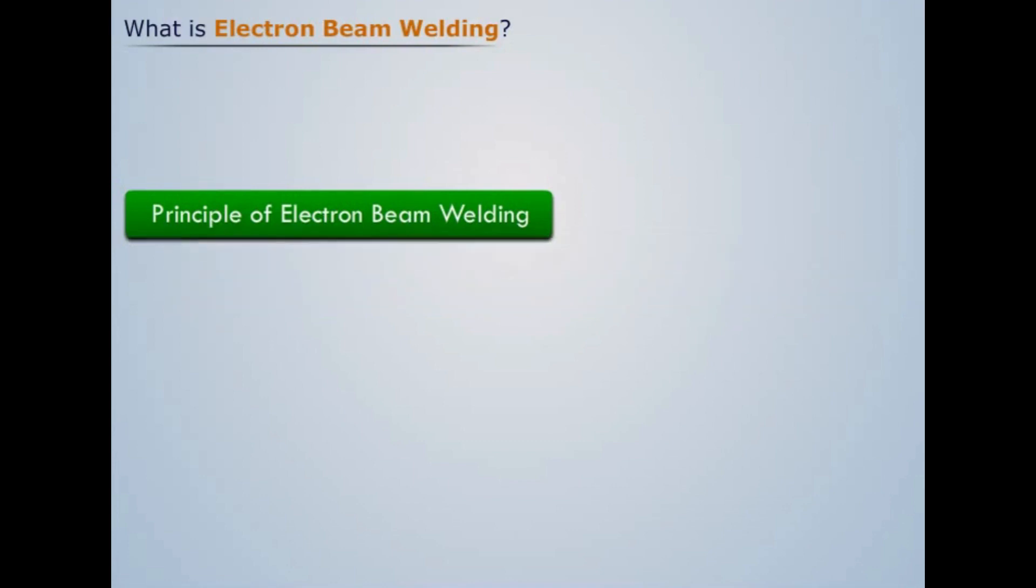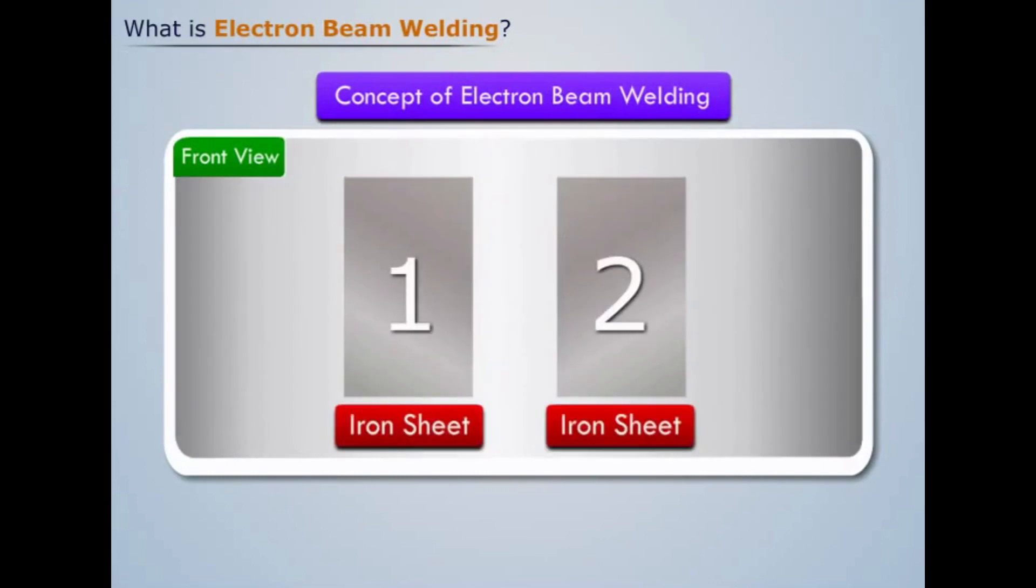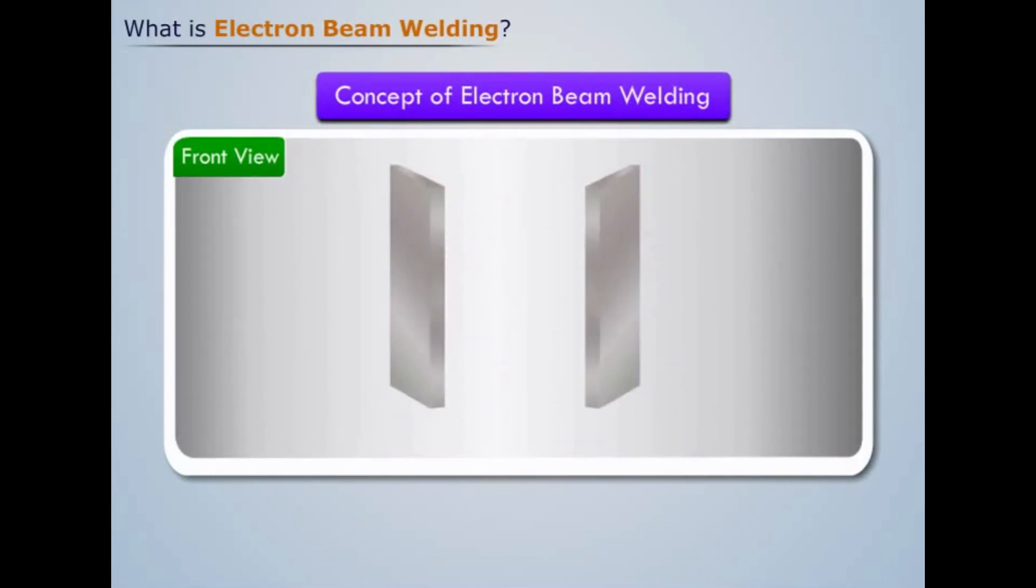To understand the concept of electron beam welding, let us consider two iron sheets and try to join them. For this, let us keep one sheet beside the other and place them at the bottom of a closed vacuum chamber.